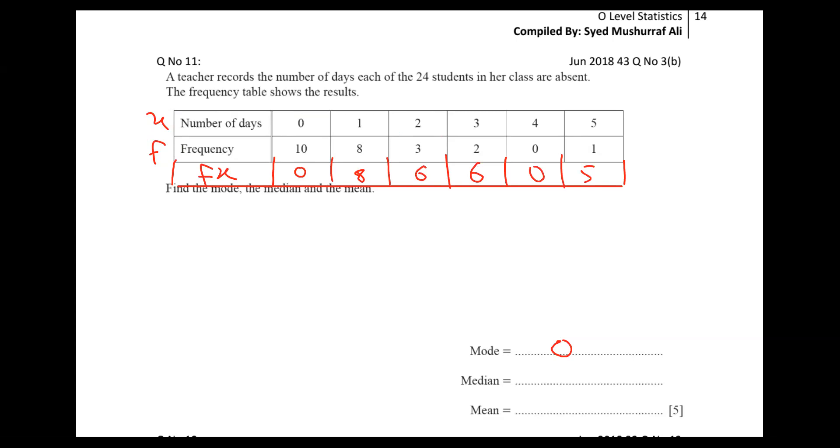Five. And the mean formula we have is sigma fx by sigma f, and mean is represented by x bar. Sigma means sum of what? All this column's values. So add them all and write it here. So I'm writing zero plus eight plus six plus six plus six plus zero plus five.